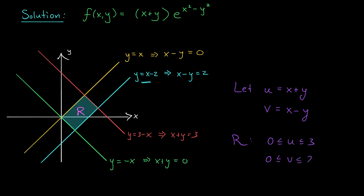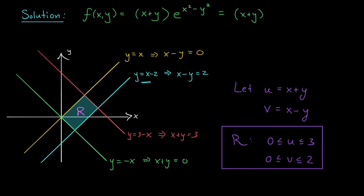Notice as well that the variables u and v can be seen in my function f of x, y. If I rewrite my function as (x plus y) times e to the (x minus y)(x plus y), and do a little factoring up in the exponent, this is exactly u times e to the uv. This provides further evidence that our choices of u and v were good choices — they appear in our function and they transform our region into a rectangle. So let's go ahead with the change of variables formula and see if we can evaluate our integral.